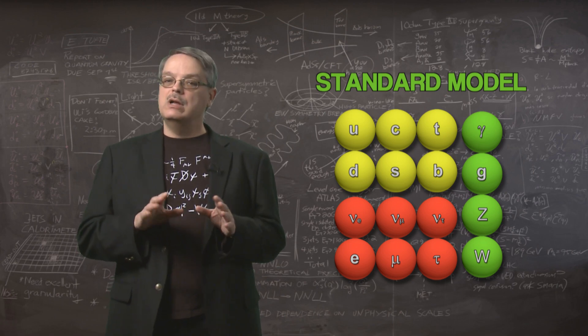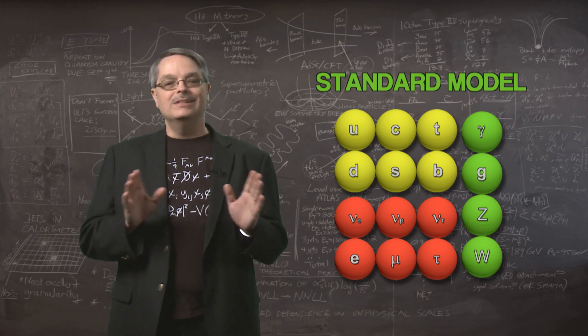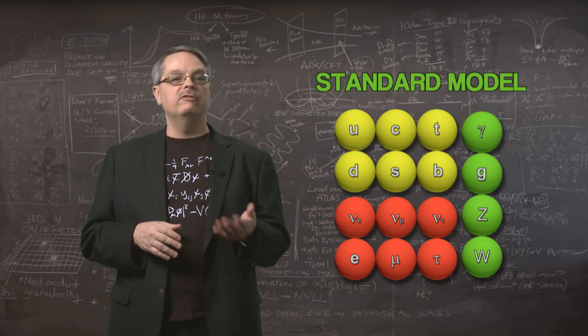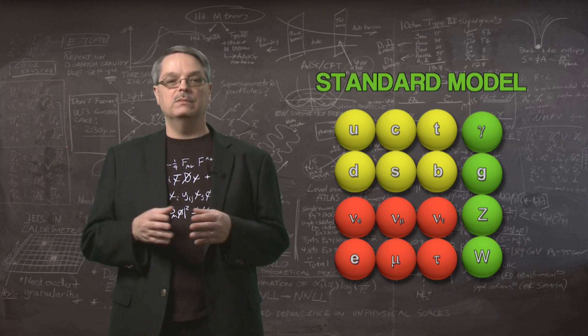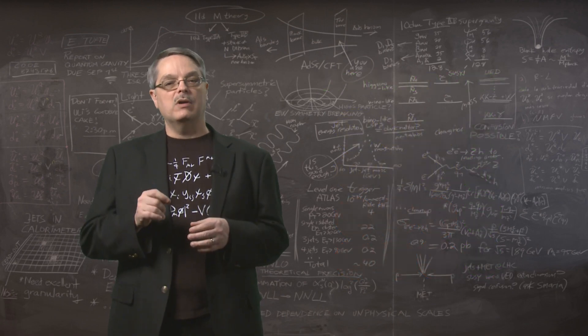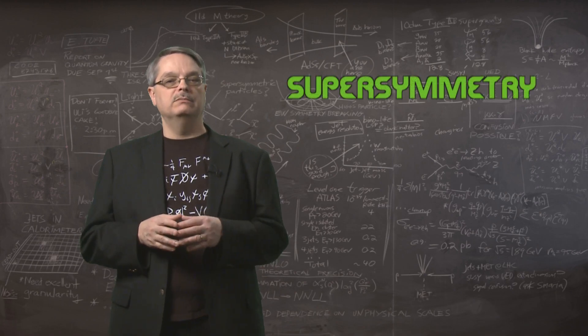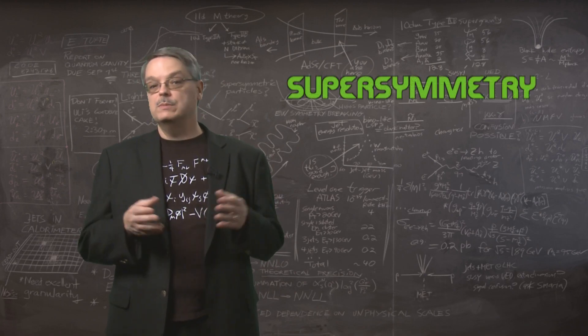However, the Standard Model is not complete. There are questions it doesn't answer, and so we continue to try and find better theories that explain even more. An idea that is often tried is one that we call supersymmetry, and I'm going to tell you what supersymmetry is all about.